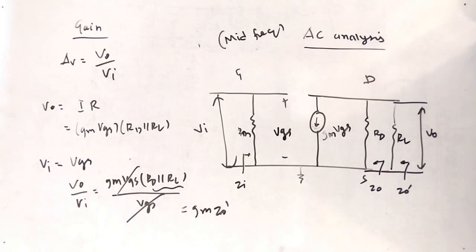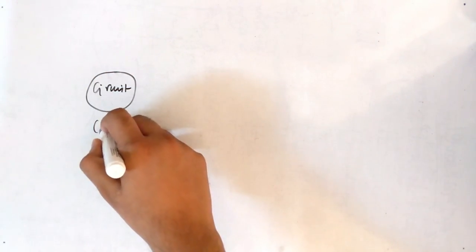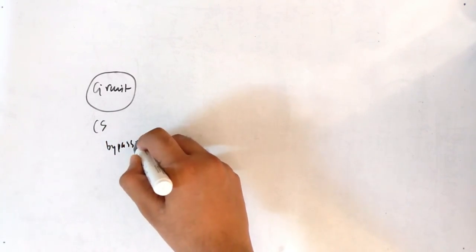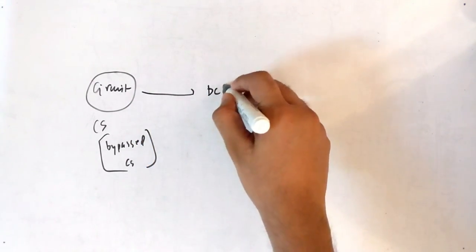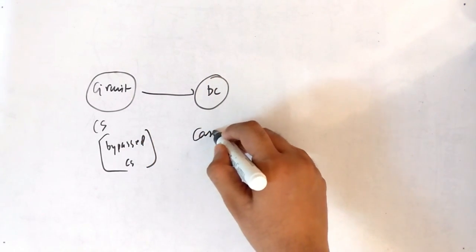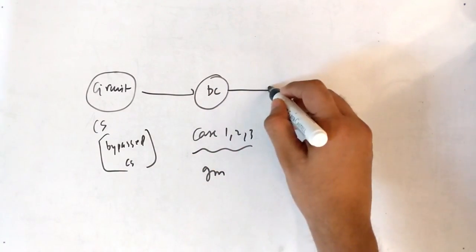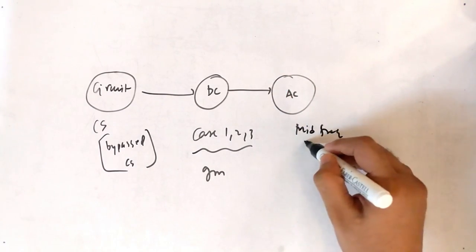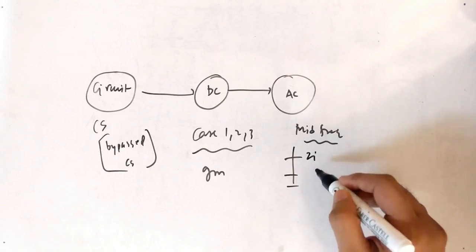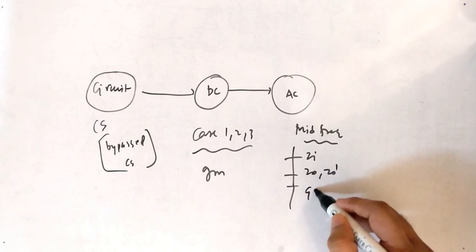In this video we have seen the circuit of the common source configuration with bypass capacitor CS. Then we found the DC analysis, examining the various cases 1, 2, and 3 to find the value of GM. Then we moved forward to AC analysis where we drew the mid-frequency AC circuit and found the various terms: input impedance ZI, output impedance ZO, ZO dash, and also the gain AV.